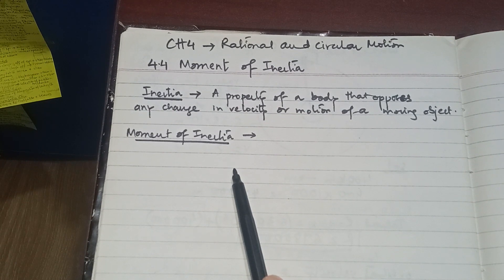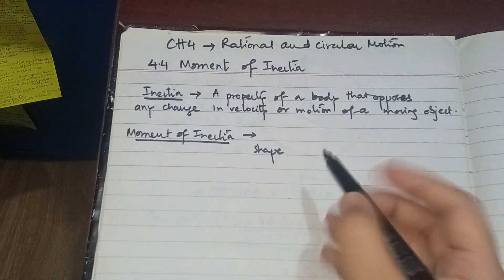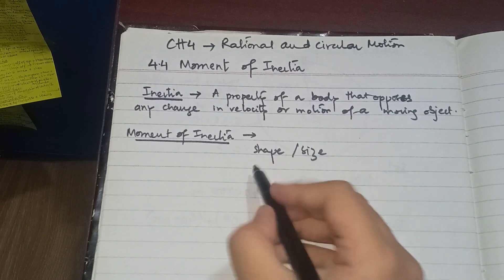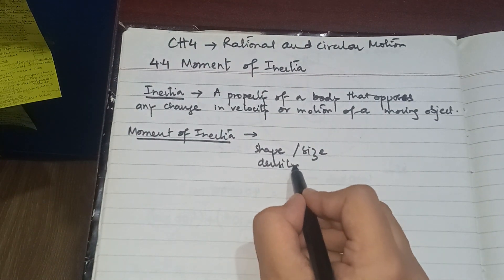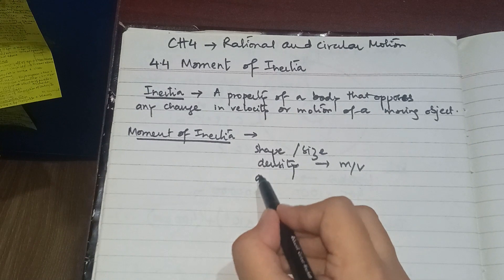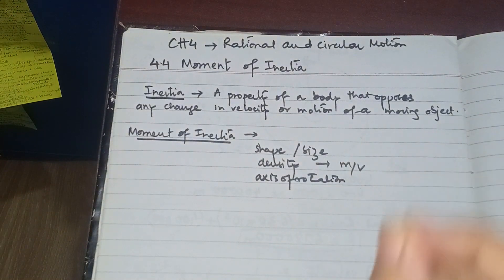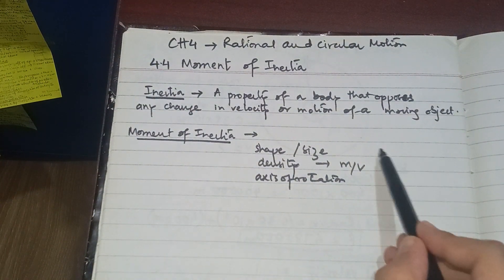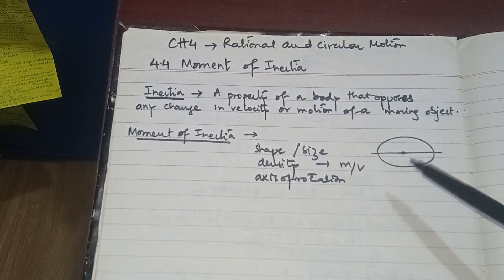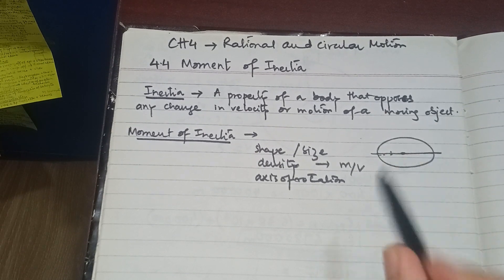The moment of inertia depends on certain things. It depends on size, and ultimately size relates to mass. It also depends on density — density is mass upon volume. Additionally, it revolves around the axis of rotation, which is basically an imaginary invisible line around which an object rotates.